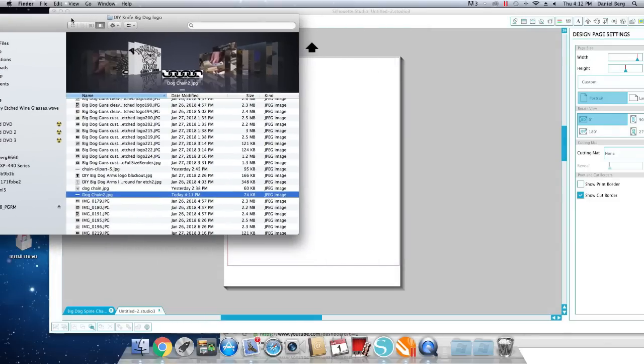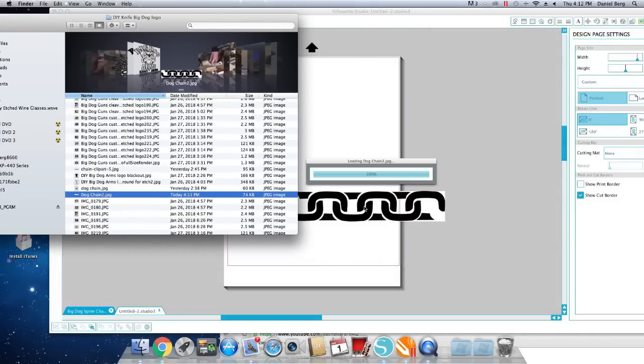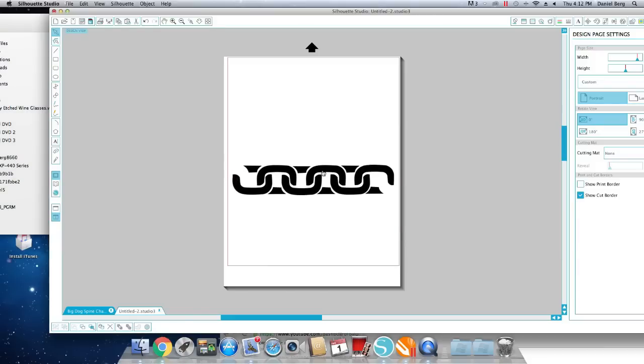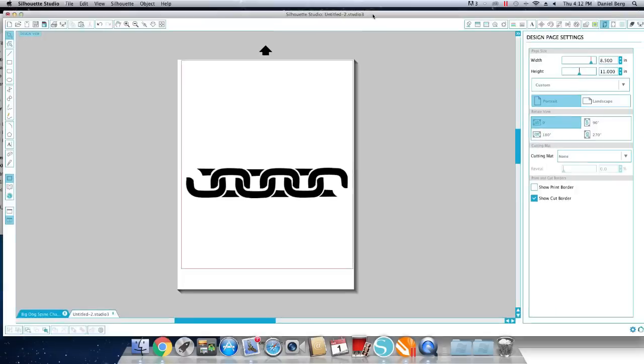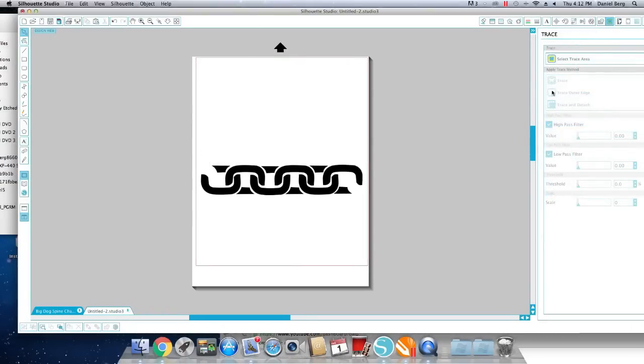And now I'm going to open up the Cameo Silhouette program. I'm going to find that file and I'm just going to drag and drop it right onto a page in the Cameo software. So of course, these chain links are much larger than I would use.